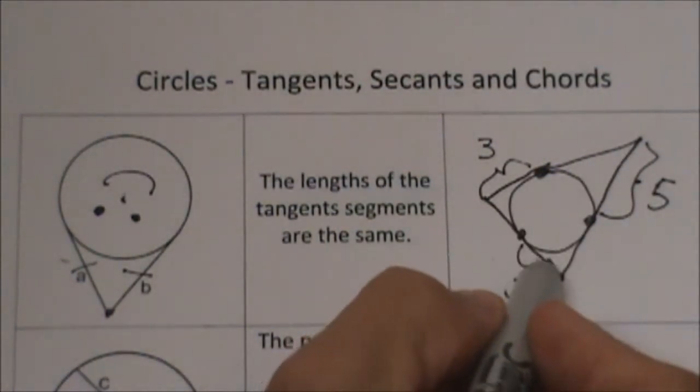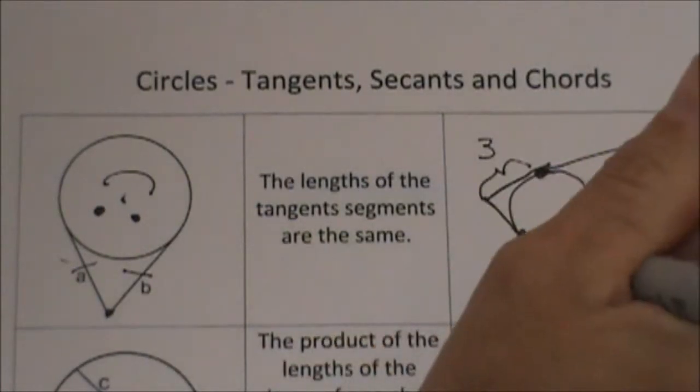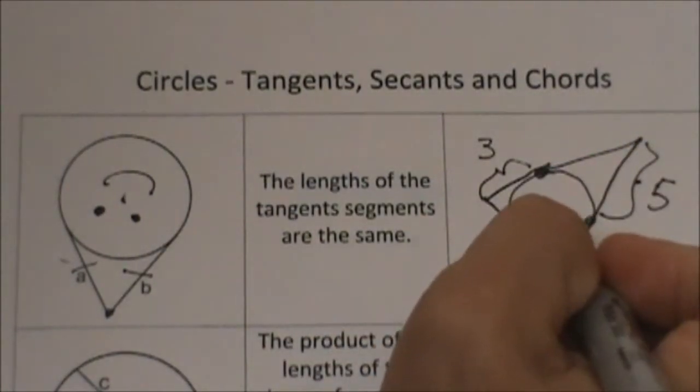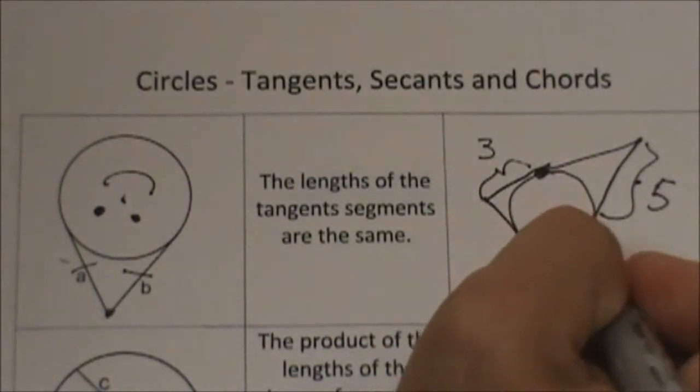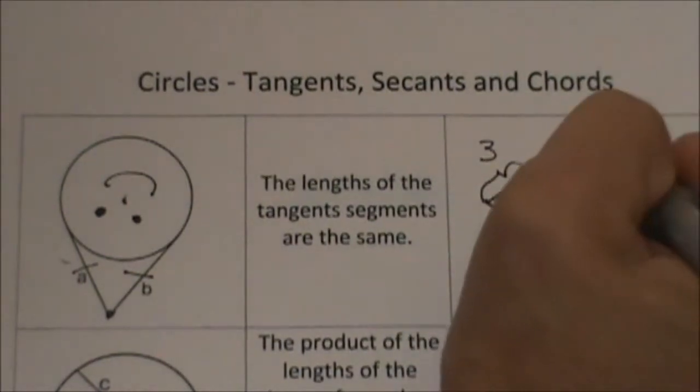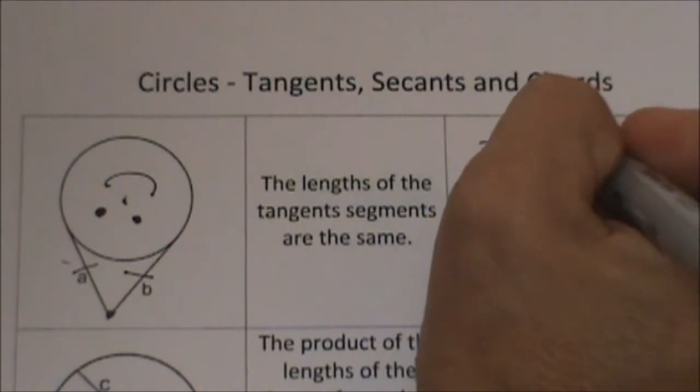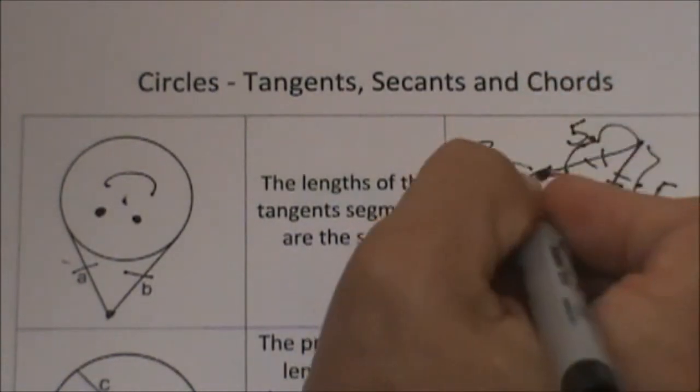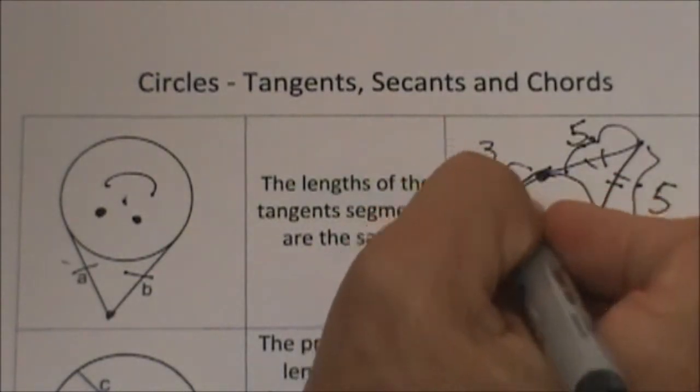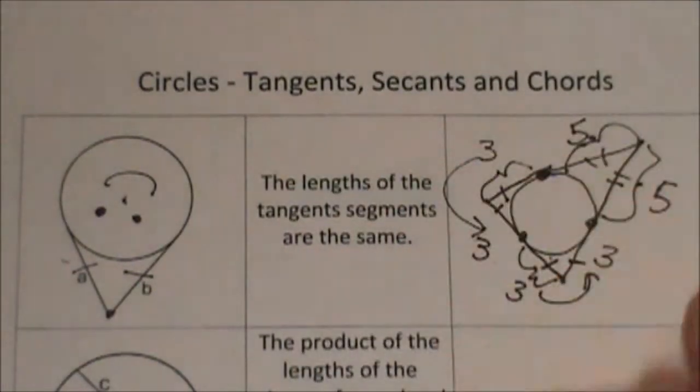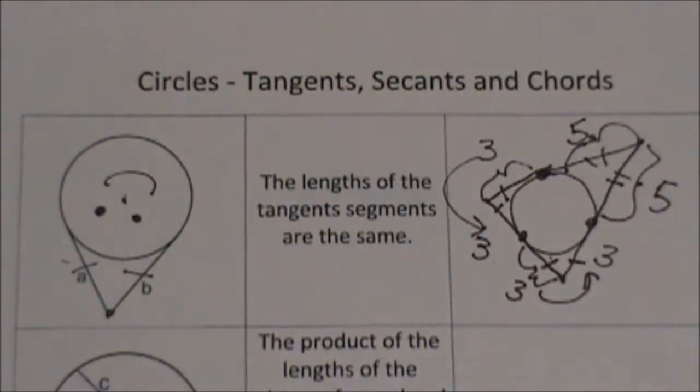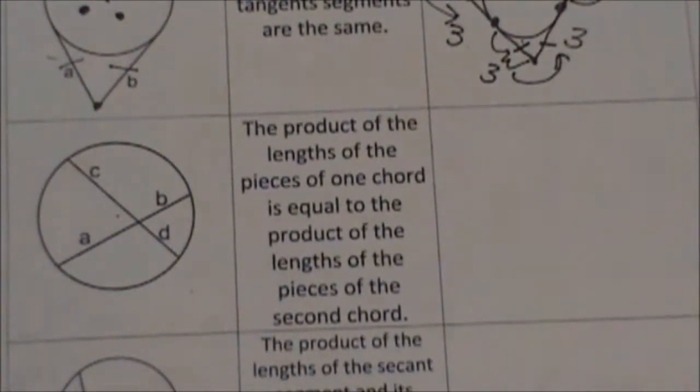Because we would say if this one is three then the other half of the party hat the one on this side would also be three. If this one is five then the one on this side must be five. If this one is three then the one on the other side of the party hat would be three and then we could add all the sides up and find the perimeter. So there's the party hat rule which is involving two tangents.